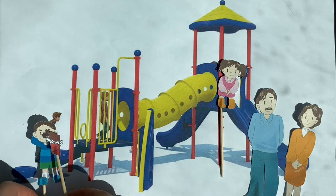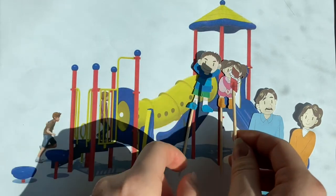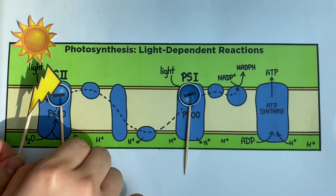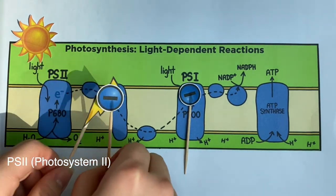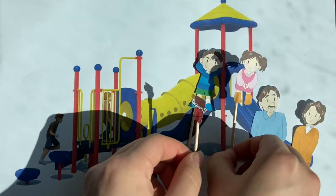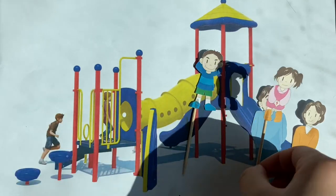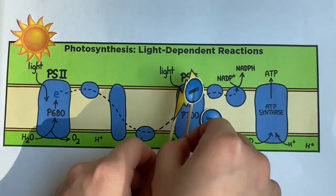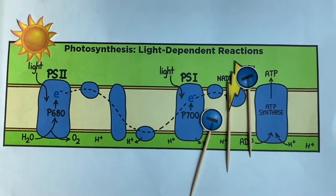As the kid runs down the playground, they lose energy and take a break at a terminal. Electrons, on the other hand, start from a place called Photosystem 2 and run, stopping at Photosystem 1, or PS1. The kid could drop the candy bar at the terminal and another kid could pick up the bar and start running. Likewise, the second set of electrons get excited and start moving too.